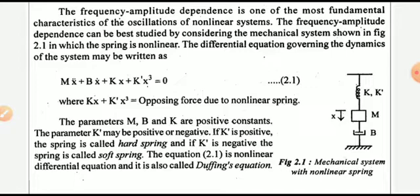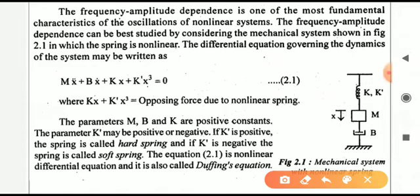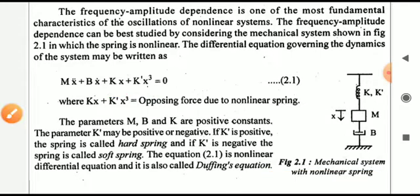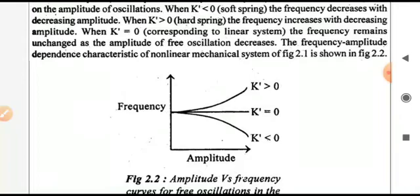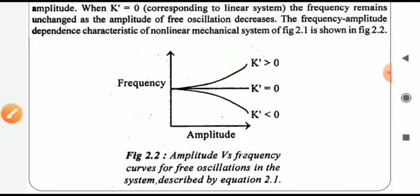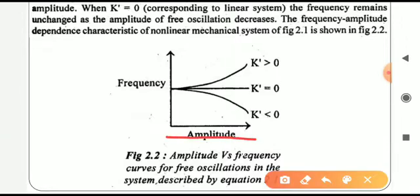Here we take the spring as a nonlinear term. For a linear spring the force term is k·x; for a nonlinear spring the term is k·x + k'·x³. When k' = 0 the spring is linear. If k' is positive it is a hard spring; if k' is negative it is a soft spring. This figure shows the amplitude versus frequency curve: as the amplitude increases, for the hard spring the frequency also increases, for the soft spring the frequency changes differently, and for the linear spring (k' = 0) the frequency remains unchanged.